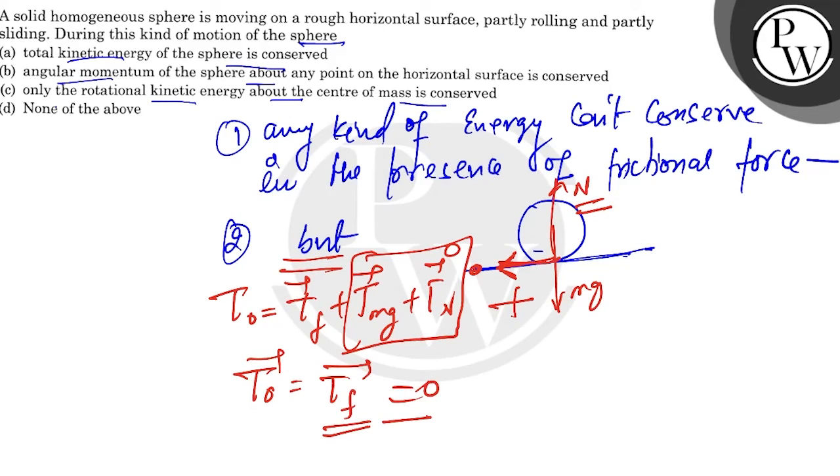So hence torque is zero. If torque is zero, then dL/dt is zero. If it is zero, then L is conserved. Angular momentum is conserved.